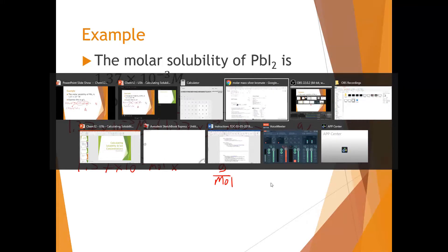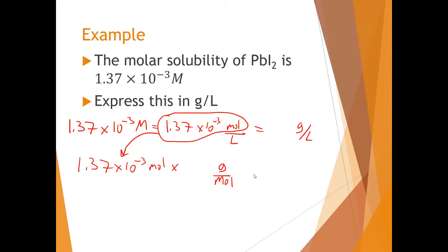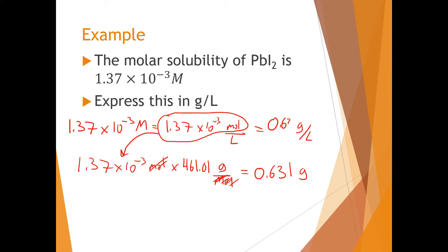In order to do that, we multiply by the molar mass of lead iodide, which has a large molar mass of 461.01 grams per mole. Carrying out the multiplication gives us a total of 0.631 grams per liter. So the mass solubility of lead iodide is 0.631 grams per liter.